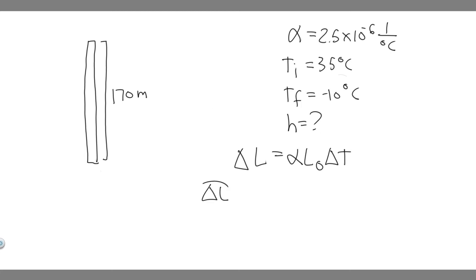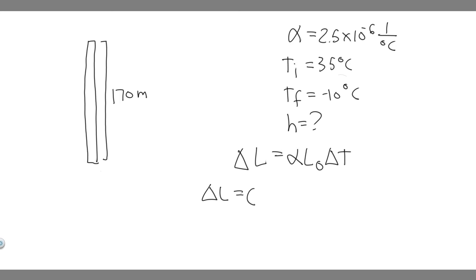So delta L — the change in length — is equal to alpha. Alpha is the coefficient of linear expansion, and they give this to you. They tell us to assume it's marble, so if you look in the table in your textbook, it's going to tell you it's basically 2.5 times 10 to the minus 6. That's the coefficient of linear expansion. Then we have L₀, the initial length, which is 170 meters, and delta T is the change in temperature.